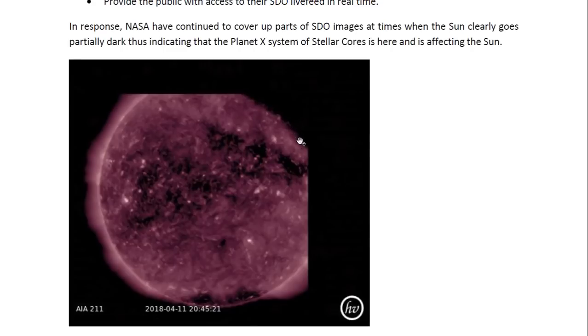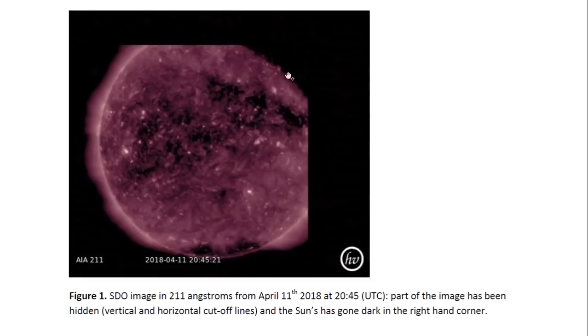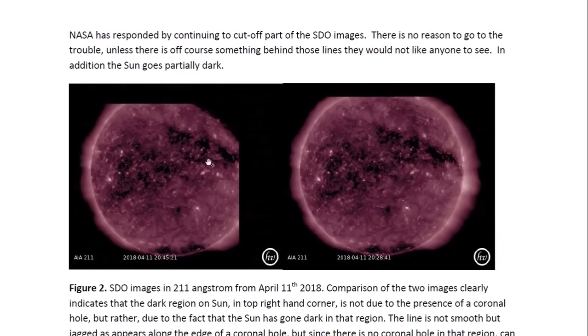What we have is a jagged interface here between light and darkness. This would be somewhat like what we'd see at the edge of a coronal hole. However, this is not a coronal hole. If we compare what is over here in the sun and what is there just a few minutes before, this image is from 2045, this one is from 2028. There's clearly no coronal hole there to cause any jagged edge. So this shows that the sun is going dark. This region of the sun has gone dark.